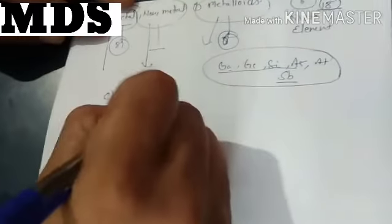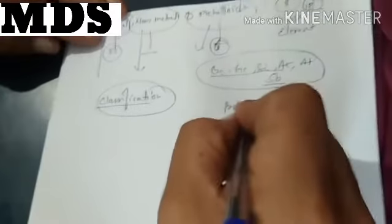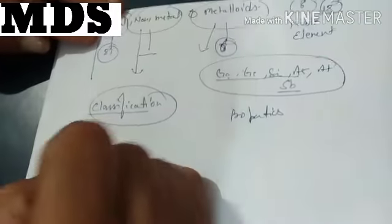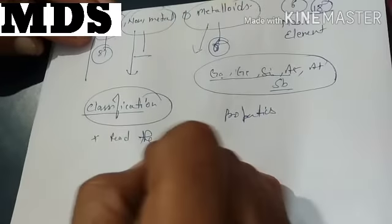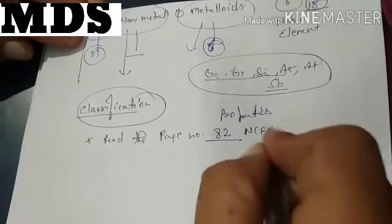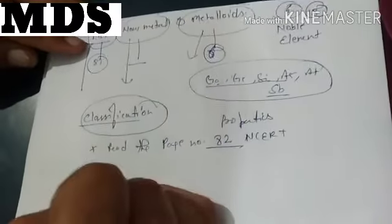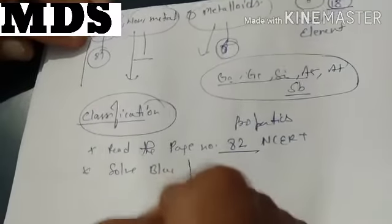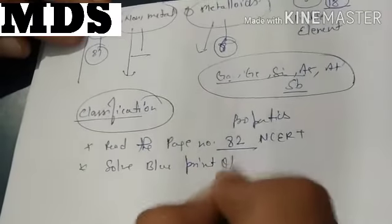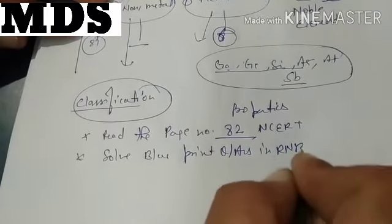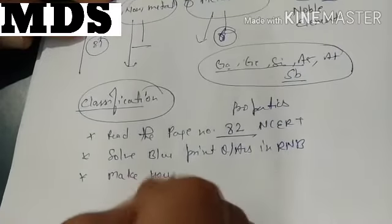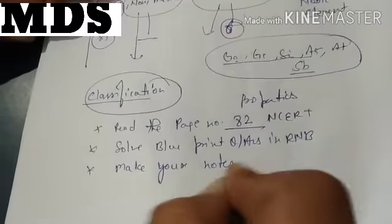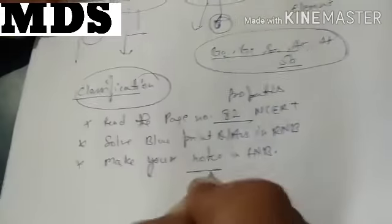So today our classification topic is completed. In tomorrow's lecture we will discuss about the properties. Your homework is: first, read up to page number 82 in NCERT; second, solve the blueprint in a rough notebook; and third, make your notes in your fair notebook. Thank you.